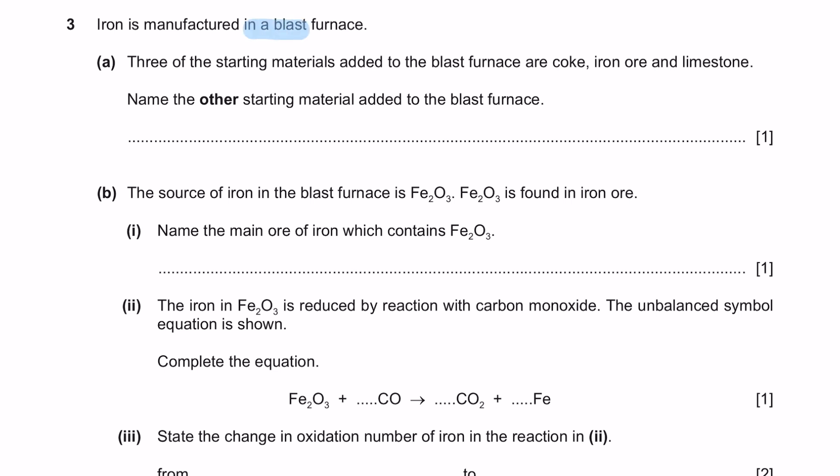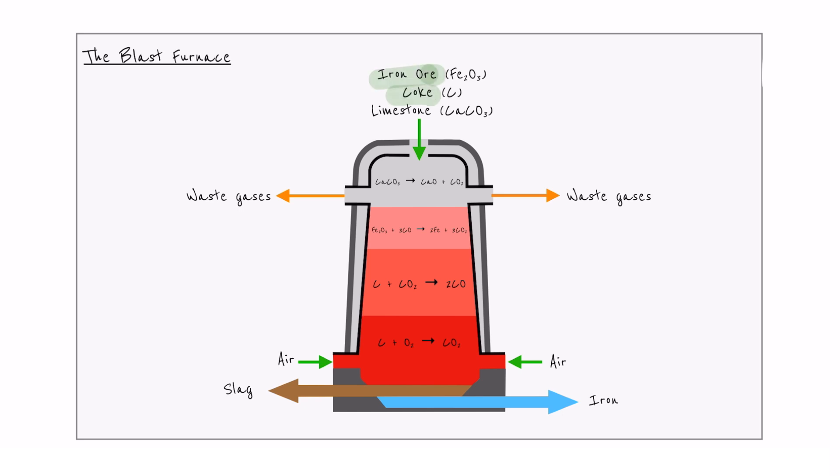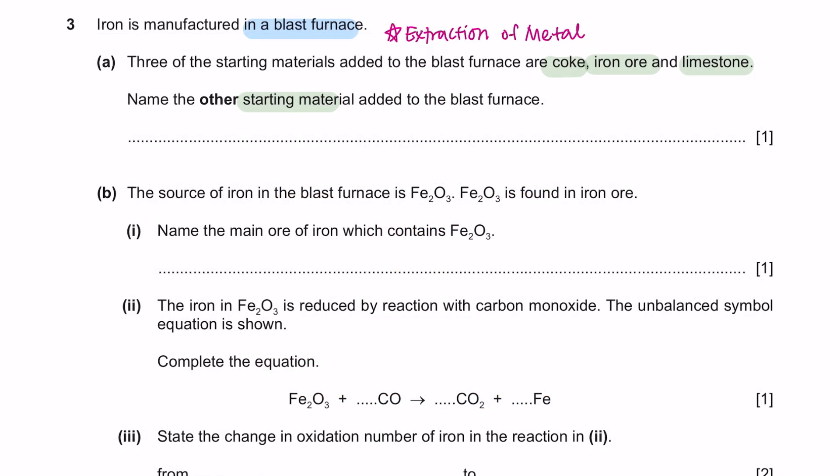Question 3. Iron is manufactured in a blast furnace. Question A: 3 of the starting materials added to the blast furnace are coke, iron ore and limestone. Name the other starting material added to the blast furnace. This is from the topic of extraction of metal. We will add iron ore, coke and limestone into the blast furnace, and we're going to burn the coke. Therefore, we will also include hot air into the blast furnace. So the other starting material is hot air. Question B: the source of iron in the blast furnace is Fe2O3, which is found in iron ore. Name the main ore of iron which contains Fe2O3. It is hematite. Don't get confused with bauxite. Bauxite is for aluminium ore which is Al2O3.